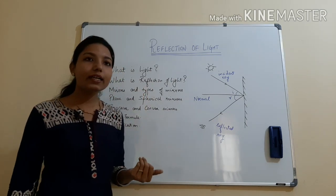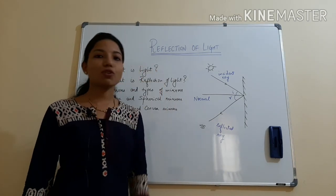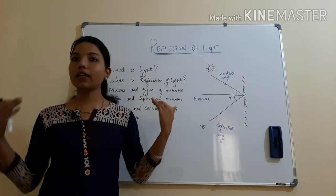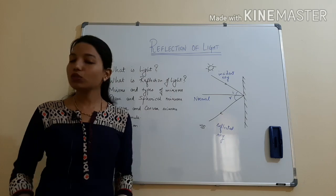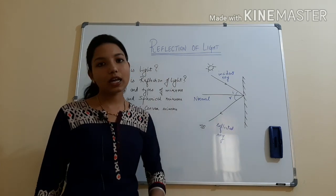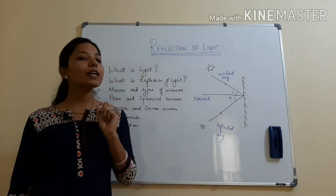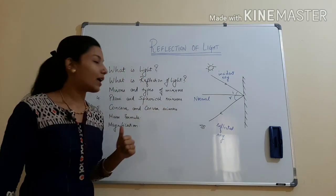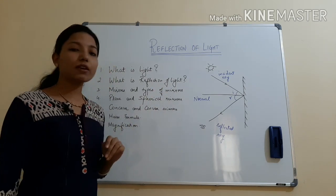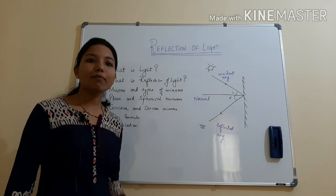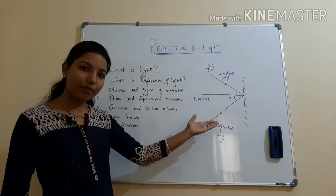So light is an electromagnetic radiation that is used for a sensation of vision. Without light we cannot see. If you go in a dark room where there is no light, nothing is visible. Then you have to turn on your phone's torch or you have to switch on the light. So this is the reason why light is very important. That's why an entire chapter is made on light. Second topic is reflection of light. Reflection of light is nothing but bouncing back of light.